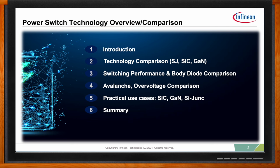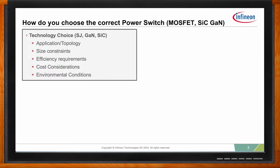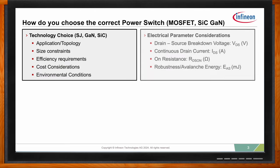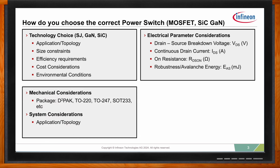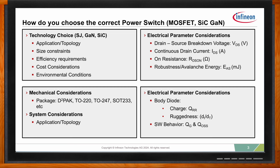What kind of design considerations should we keep in mind when choosing a power switch? There are many, but the key attributes or electrical specifications to consider are: what power topology you're using may lend itself better to one technology over the other — GaN for efficiency, silicon junction for cost since we're always cost-sensitive — and then environmental conditions, which have a large impact on the difference between silicon carbide, silicon junction, and GaN.